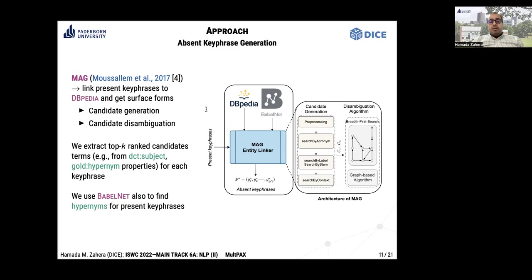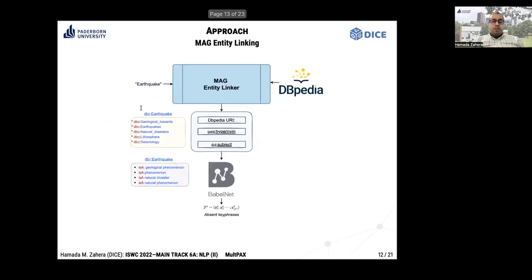First, it generates a list of candidates for the input and performs candidate disambiguation until it finds the corresponding DBpedia resource. For example, given the present keyphrase 'earthquake', MAG entity linking first finds its corresponding DBpedia URI, which here is DBR earthquake.